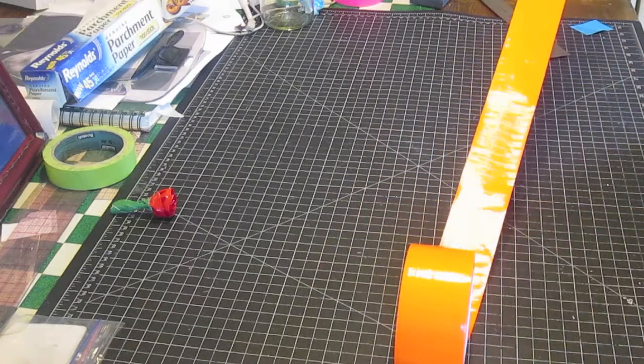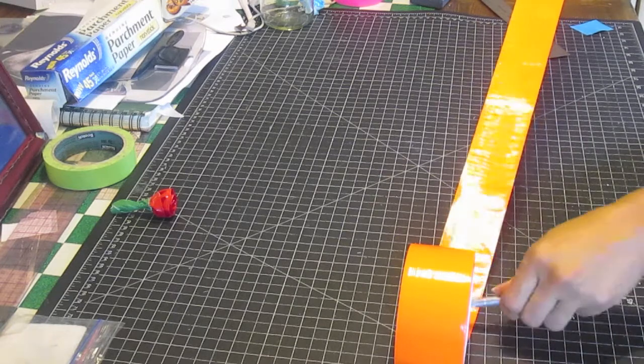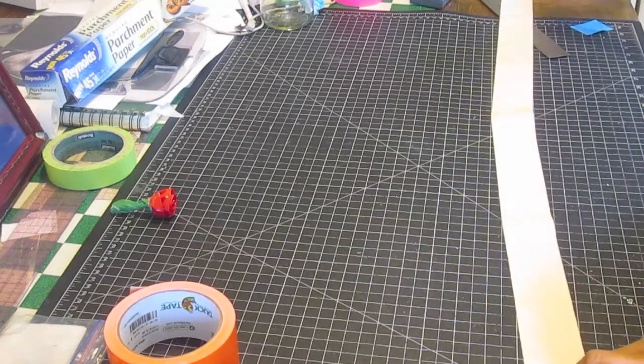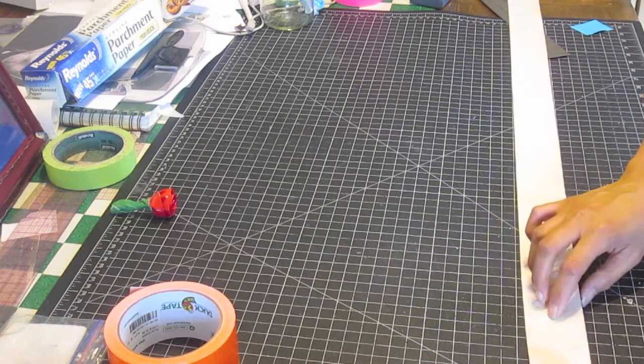Cut a strip of tape the length of your wingspan. Fold it in thirds. When folding long strips like this, it is best to use your fingernails. This helps you avoid getting stuck to the tape.